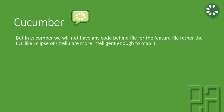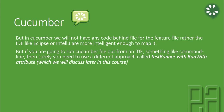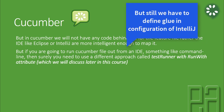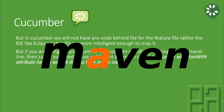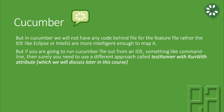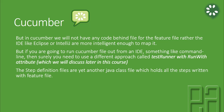Rather, IDEs like Eclipse or IntelliJ are intelligent enough to map it. But if you are going to run a Cucumber file outside of an IDE — something like a command line — then you will need to use a different approach called testrunner run-with attribute. These are more advanced topics we'll discuss later in the course. For now, just know that if you run a feature file from within an IDE, you can run it just like a normal Java file by right-clicking and selecting 'Run as feature file.' Whereas if you run the feature file from the command line with Maven, you will need a testrunner with a run-with attribute — otherwise called annotations in Java. The step definitions file is yet another Java file which holds all the steps written in the feature files.